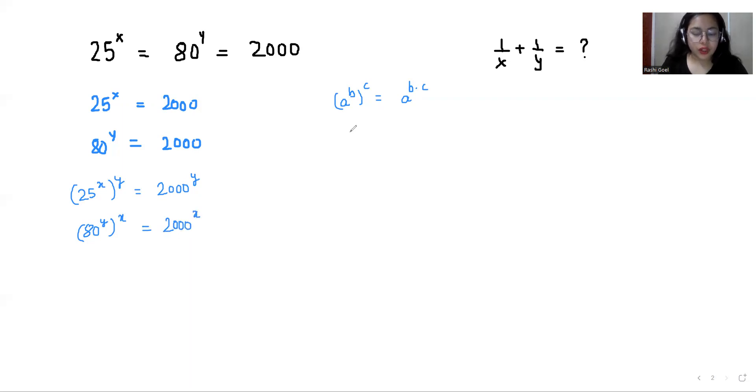So we know that if there is an identity, we use a power b power c, you can write it as a power bc. So this equation I can write as 25 power xy equals 2000 power y, and here 80 power xy equals 2000 power x. Now I'll take this as equation one and this as equation number two.